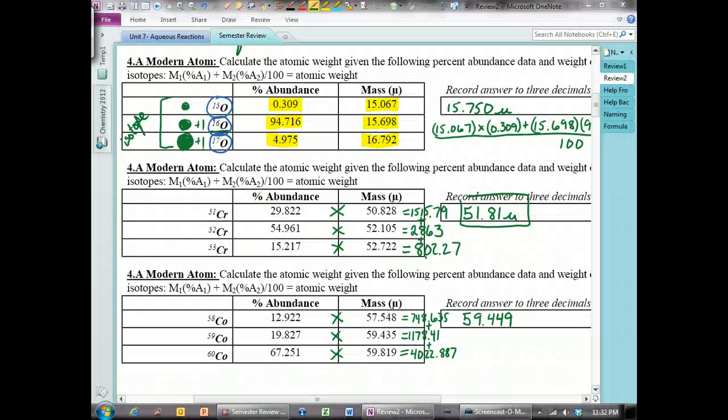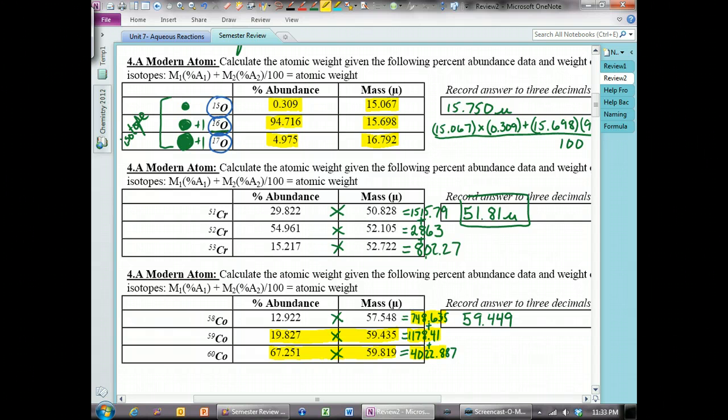And, when you do the math, you get 748.635 when you multiply those two numbers. 1178.41 when you multiply these two numbers. And when you multiply the last two numbers, you get 4,022.887.